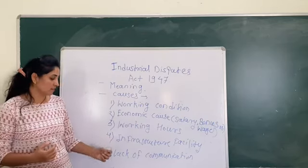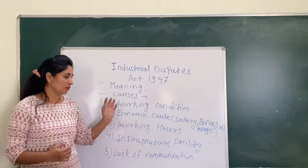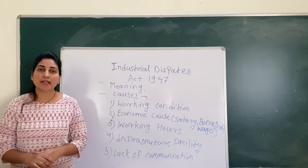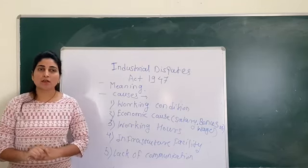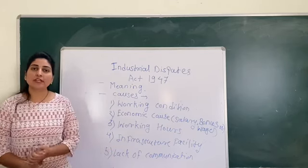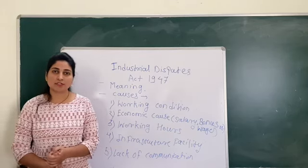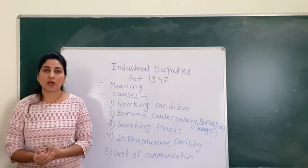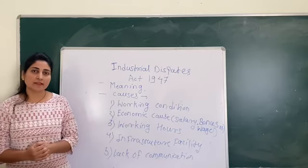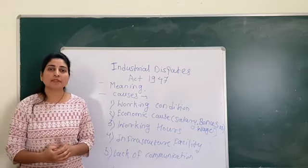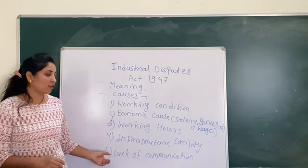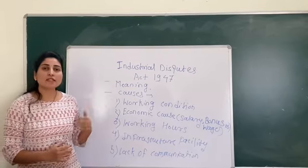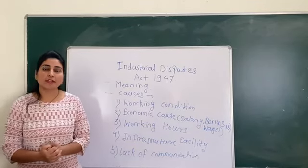The next cause of industrial dispute is lack of communication and coordination between all employees. Each and every organization follows an organizational structure, because this structure defines the direction flow and authority flow. This structure has three types of levels: top level, middle level, and low level. Lack of coordination and communication between these levels causes employees to disagree or feel dissatisfied in their job positions.